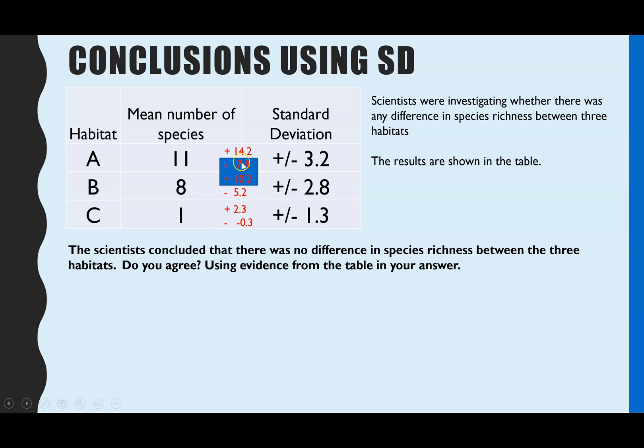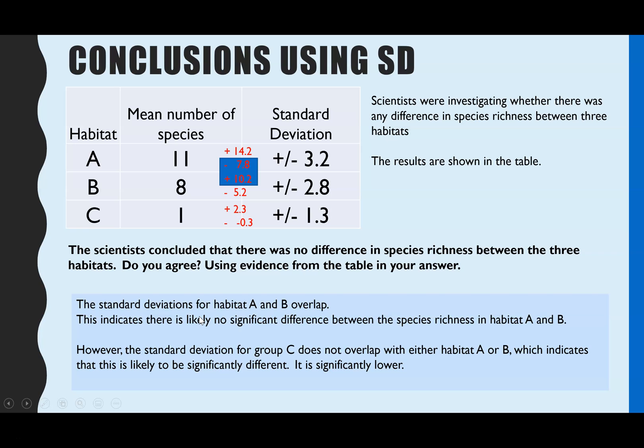And from doing that, we can see there would be an overlap in the standard deviation bars on that bar chart if we take into account the higher end of group B and the lower end of group A. Because this one would go all the way up to 10.2 and this one goes all the way down to 7.8. So they would cross over and overlap. So what that tells us then is the standard deviations for A and B overlap. So that's the way you phrase it. There is an overlap. Then you have to say, well, that indicates. So that indicates there's likely to be no significant difference between species richness in habitat A and B. So that is our supporting evidence.